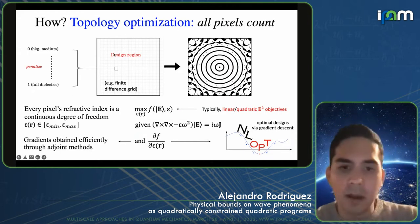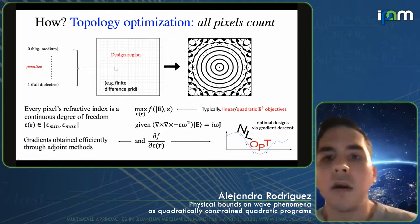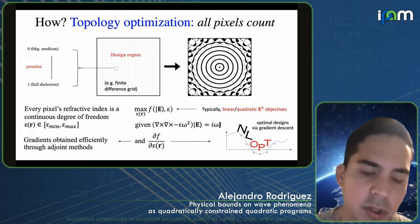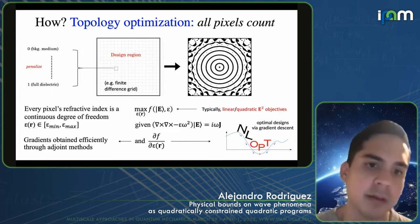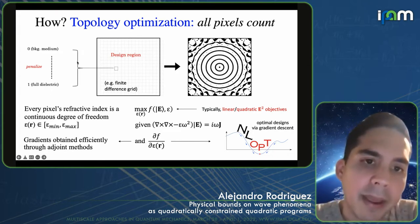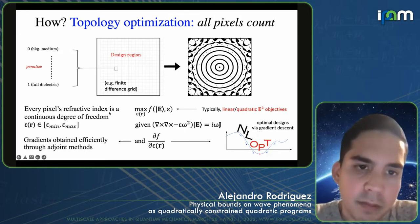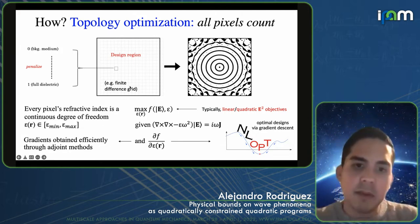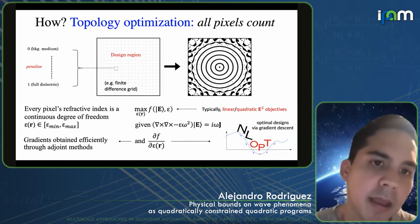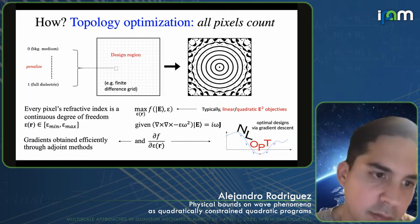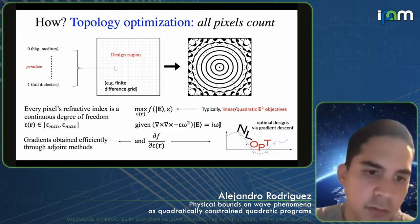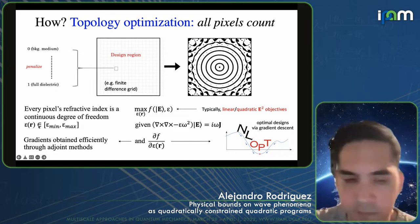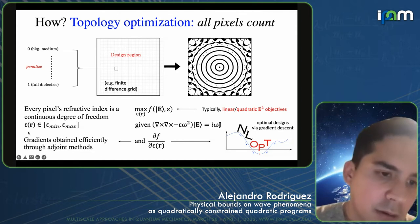A popular flavor of inverse design is known as topology optimization or density optimization. The idea is: given a computational domain where you want to design a device, you have a finite difference grid where you're discretizing Maxwell's equations or whatever PDE you're interested in. The basic relaxation is that you assume every voxel in that computational cell is a continuous degree of freedom where the permittivity, susceptibility, or potential can vary within some range.